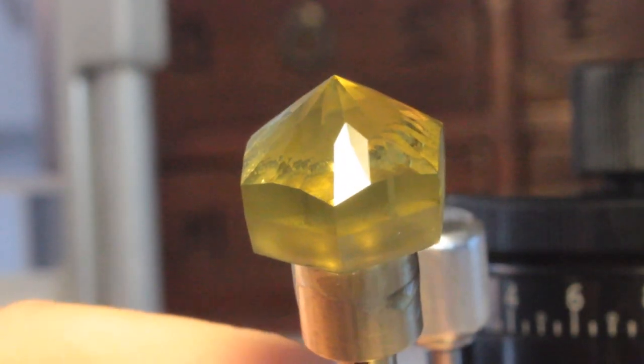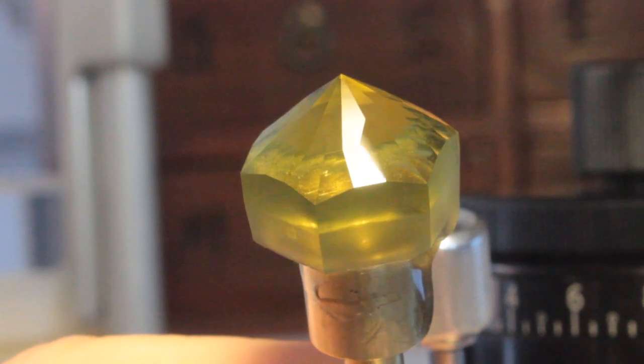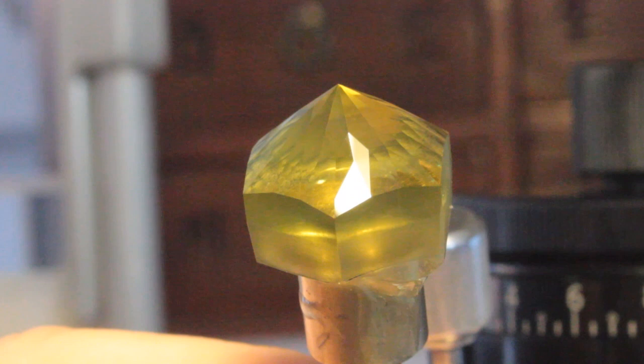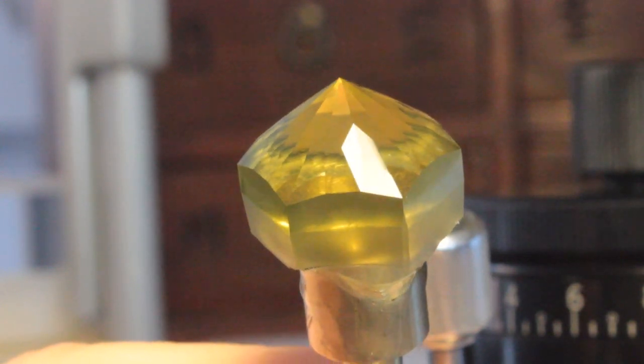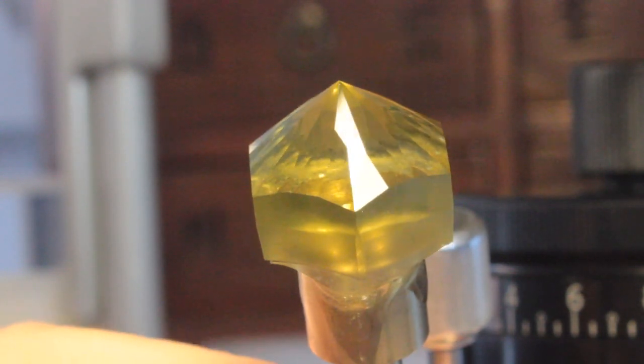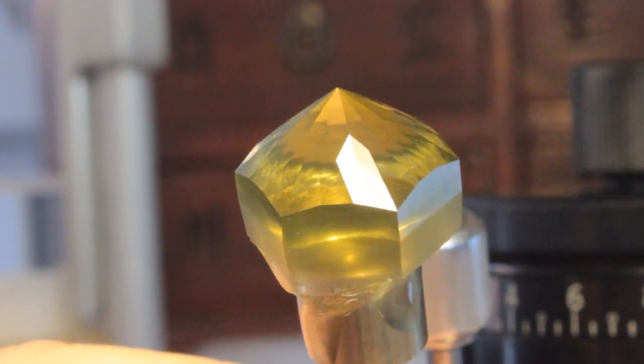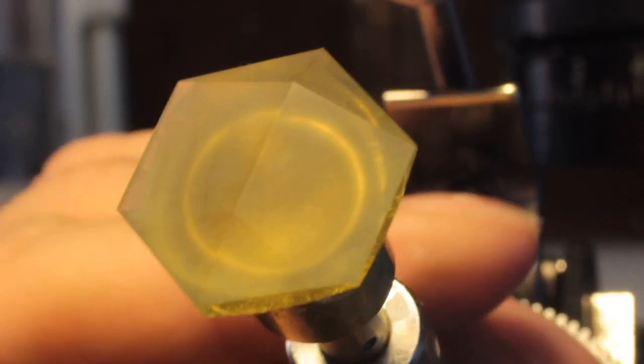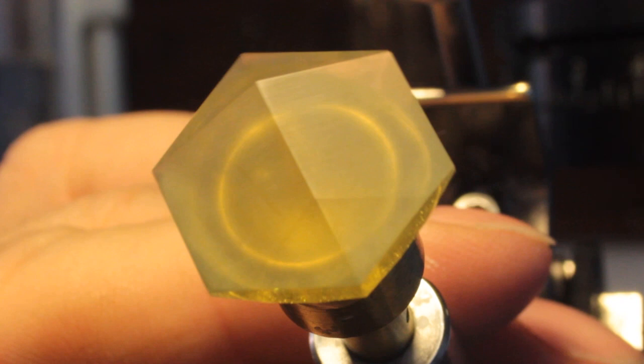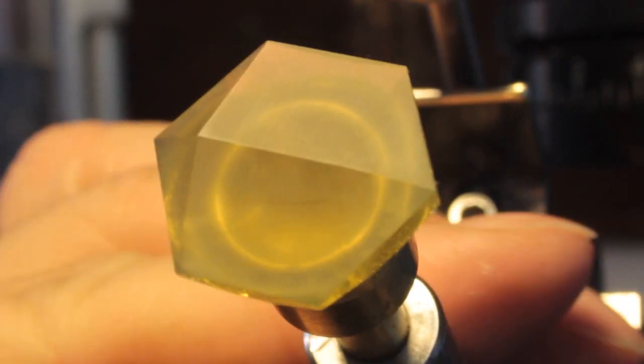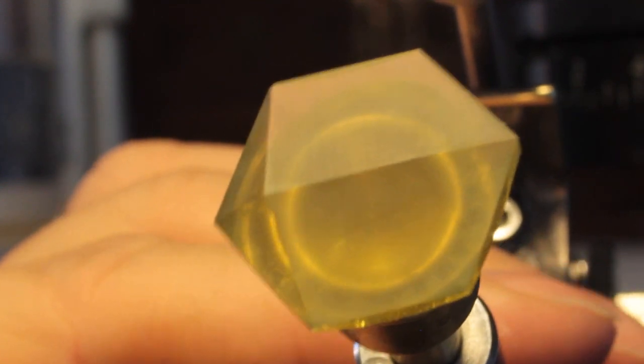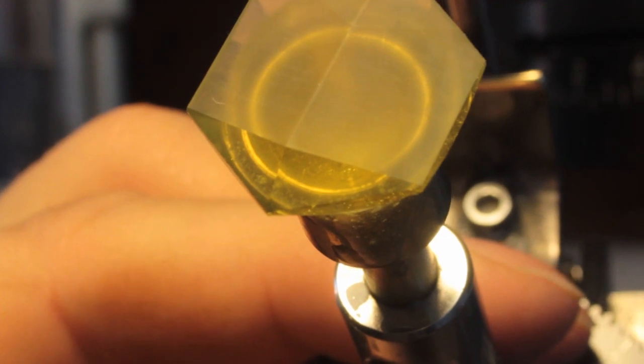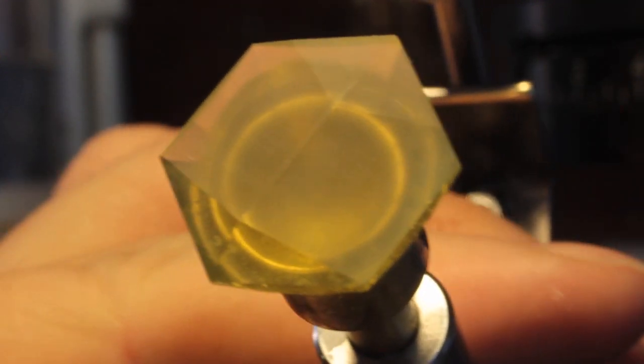I finished polishing the pavilion of our citrine with the Creamway lap from Gear Loose, and I used a spray bottle of cerium oxide and water. Polished right up beautifully, no issues at all. So now I will transfer the stone and cut the upper half of our Excalibur design. I've gone over the basic facets on our citrine for the Excalibur design using a 600 grit lap, and the first two facets I went over with my 12M.